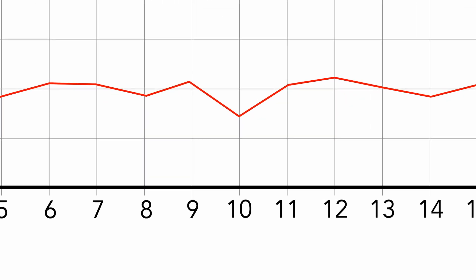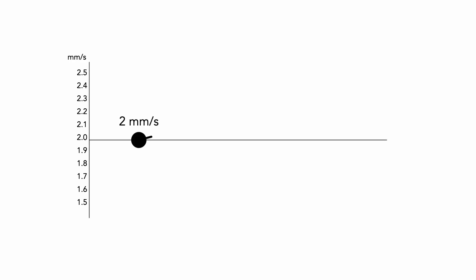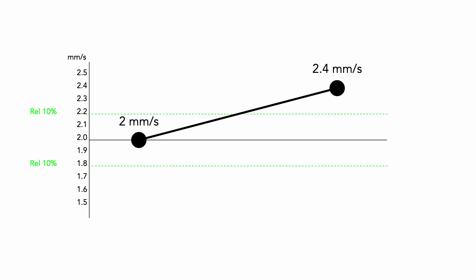What is a significant change? It is the difference between values when the user wants to save both of them. A significant change occurs when the difference between the last saved value and the new measured one is equal to or higher than the values set in minimum relative change and minimum absolute change simultaneously. For example, the last saved value is 2 mm/s, the new measured value is 2.4 mm/s, with minimum relative change set to 10% and minimum absolute change set to 0.1 mm/s.